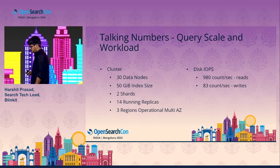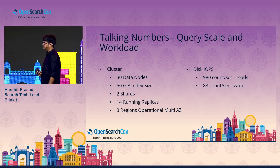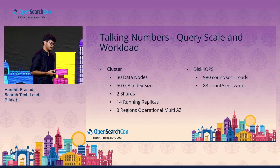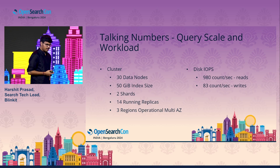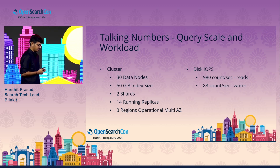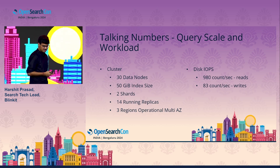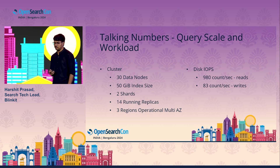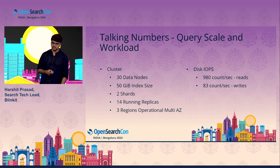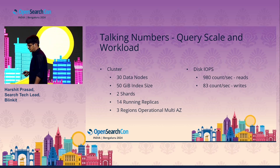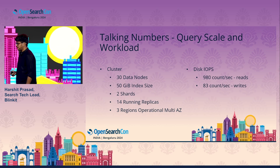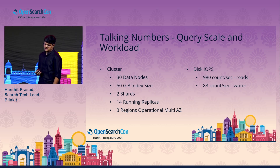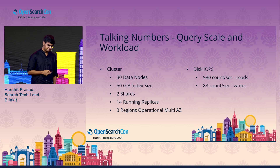Talking about the cluster configuration: we operate our product index with 30 data nodes. That index is around 50 GBs. We have two primary shards on which we do all the replication and data distribution across the data nodes. We have 14 running replicas of the shards, and we also operate our cluster in a multi-AZ setup with three availability zones.